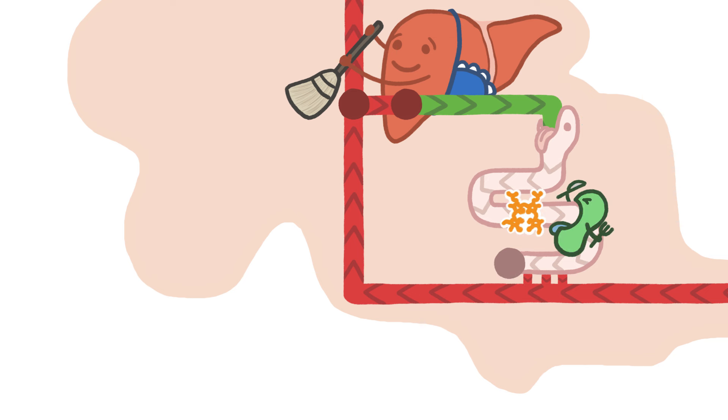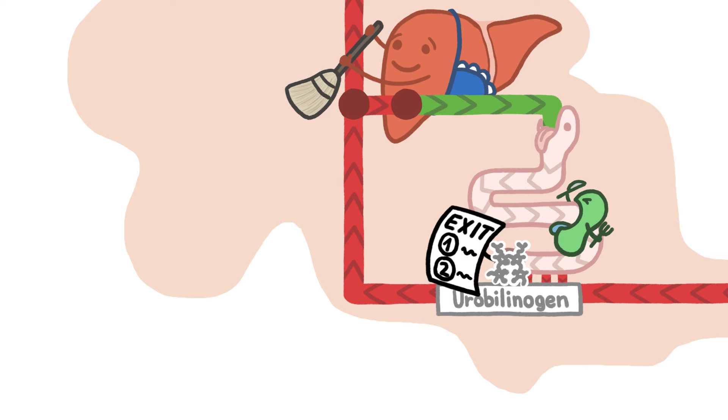Fortunately, certain gut bacteria break the cycle by intercepting bilirubin and chewing it into a slightly different molecule called urobilinogen, preparing it to finally leave the body by two possible routes.